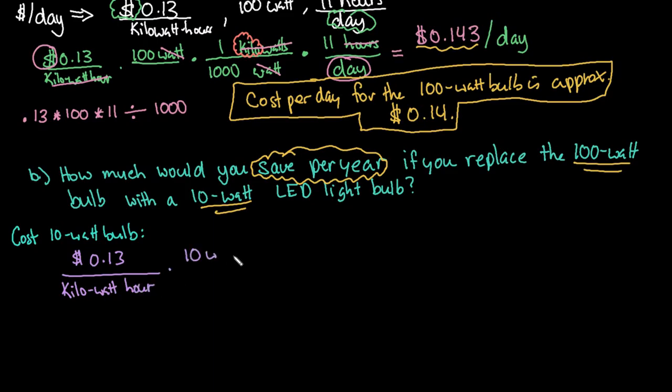And we now know that it's a 10-watt bulb. And we know that there are 1,000 watts in 1 kilowatt. And that we're running this for 11 hours per day. So you can do it this way to get your answer.